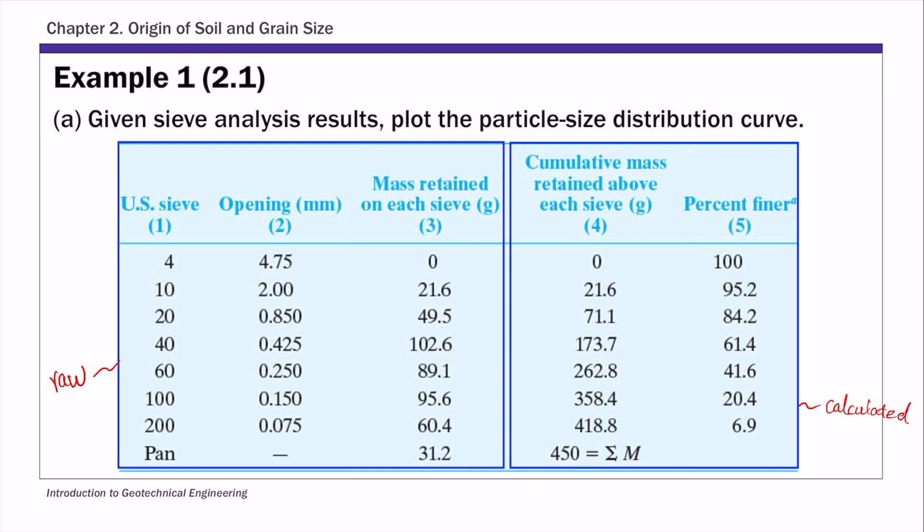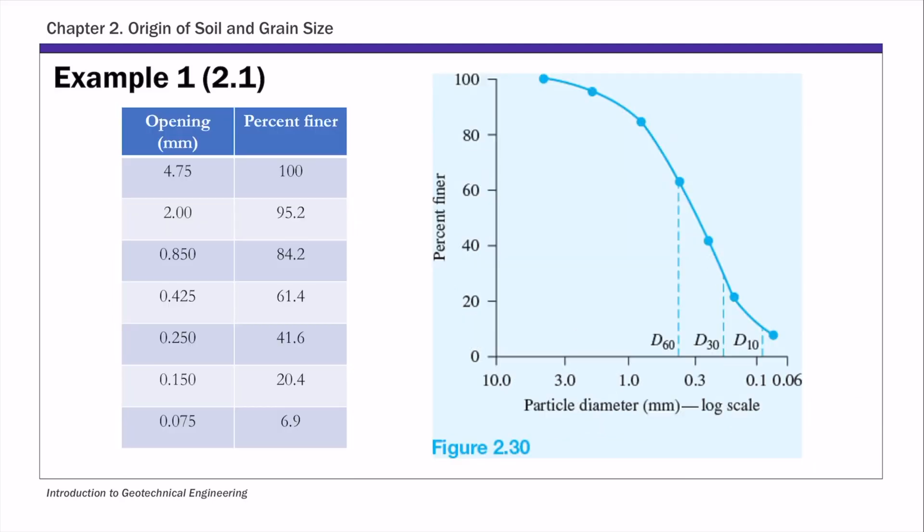To plot the PSD curve, we'll need basically the particle size, which in this case is opening of the sieve as the x-axis, and we'll need the percent finer as the y-axis. So let's take these two columns. This table here, that's basically column four and five from the previous table. The opening is your x-axis, and the percent finer is your y-axis. And the corresponding particle size distribution curve is shown on the right-hand side. That's part A.